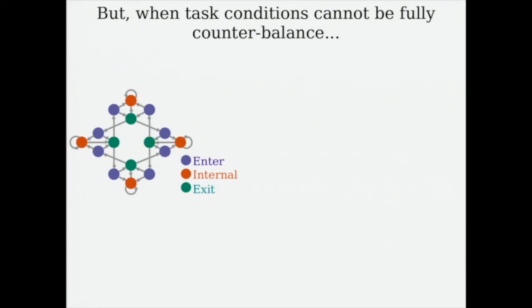For example, in this diagram, each dot represents one task state. In this task, the states transition between each other following a Markov process. So each state can be considered as a condition of a task. Therefore, by design, certain conditions always precede other conditions.